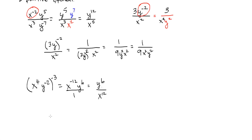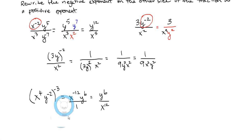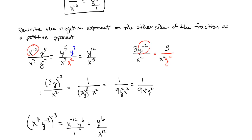So that's negative exponents. The simple way to remember it: rewrite the negative exponent as a positive and move it to the other side of the fraction. If it's in the numerator, move it down to the denominator; if it's in the denominator, move it up to the numerator. In our next video, we're going to do some complicated examples using zeros and positive and negative integer exponents. Thanks!